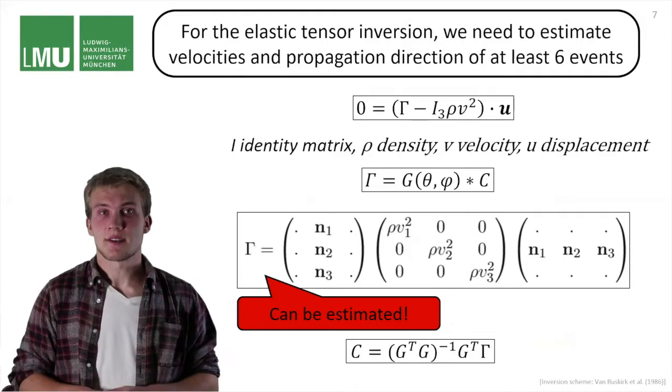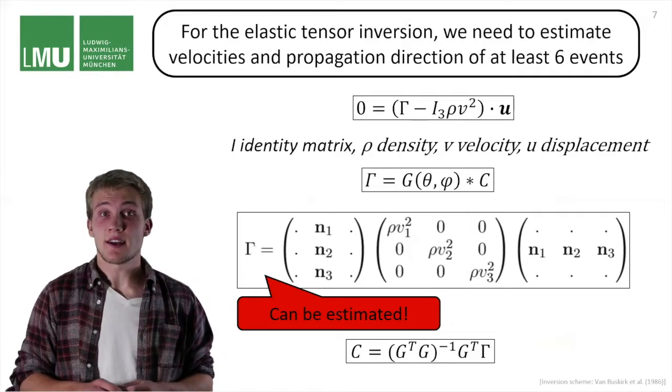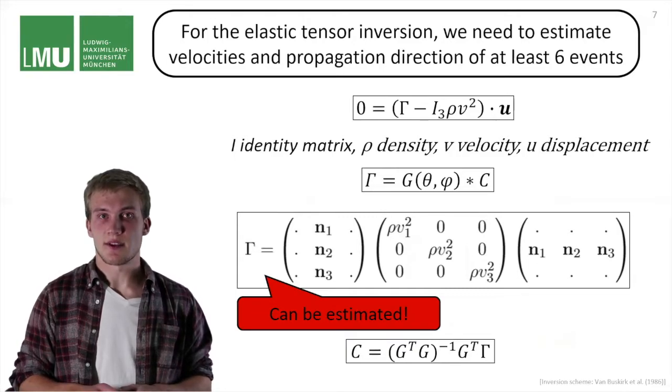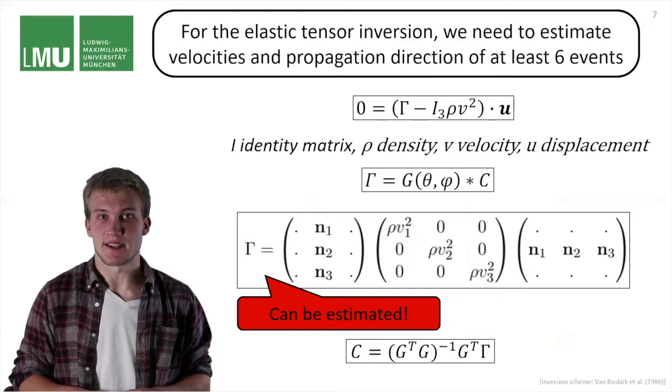As it turns out, we can estimate an unambiguous elastic tensor if we measure at least six distinct events.